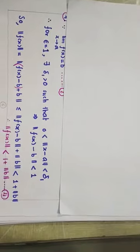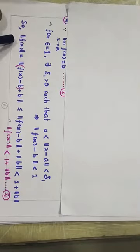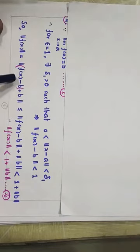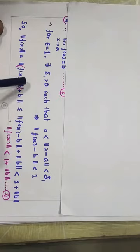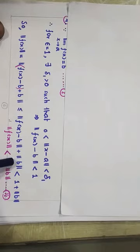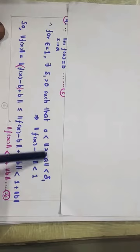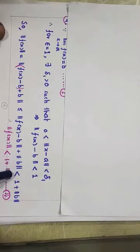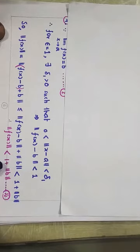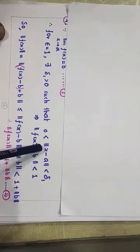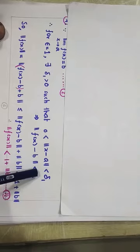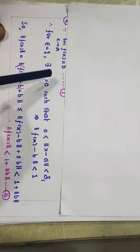So actually we will prove the boundedness of F of X. Norm of F of X equals norm of F of X minus B plus B — this minus B plus B is the adjustment — which is less than or equal to norm of F of X minus B plus norm of B. And since norm of F of X minus B is strictly less than 1, this is strictly less than 1 plus norm of B. So we have shown that norm of F of X is strictly less than 1 plus norm of B, provided that norm of X minus A is less than delta 1. Let us take this as inequality 2, and this given limit is inequality 1.